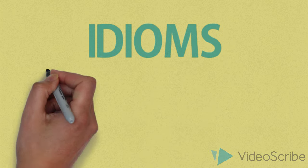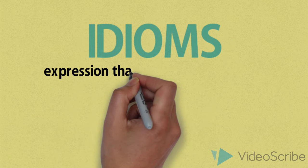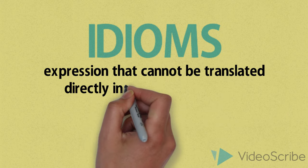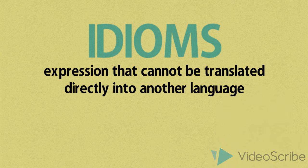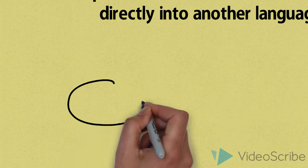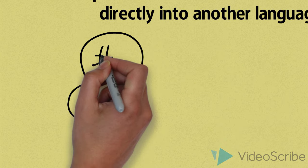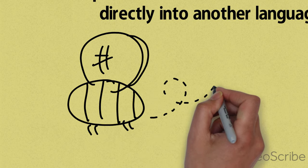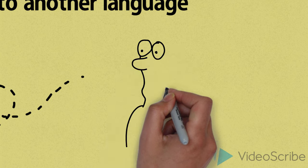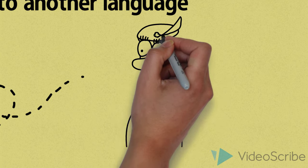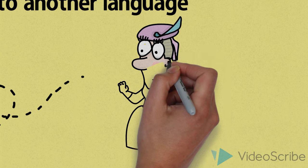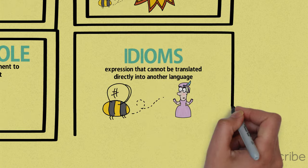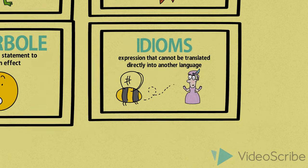An idiom or an idiomatic expression refers to the construction of an expression in one language that cannot be matched or directly translated word for word in another language. So the examples would be she has a bee in her bonnet. She doesn't literally have a bee in her bonnet. It means she's obsessed with something. But if you translated that into another language, it would mean literally she has a bee in her bonnet.